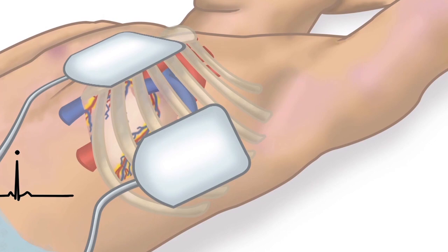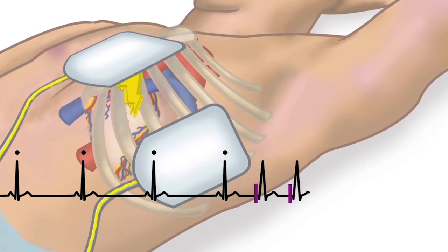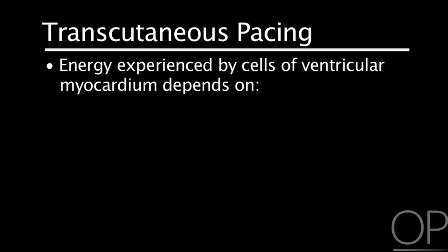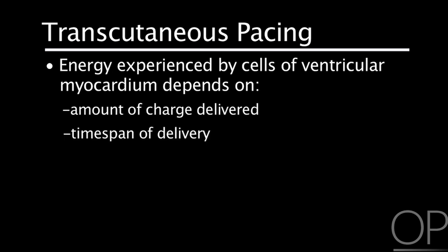The physiology of transcutaneous pacing is that you are using direct current to deliver an electrical charge to the myocardium in an attempt to depolarize enough of the ventricular myocardium to initiate a systolic contraction. The amount of energy experienced by the ventricular myocardium is a function of two variables: how much charge you deliver, and the time for which that charge is delivered. The higher the charge and the longer the delivery time, the more likely you are to cause depolarization.